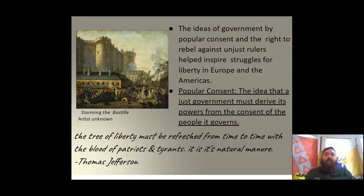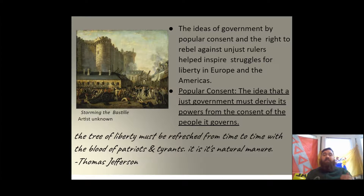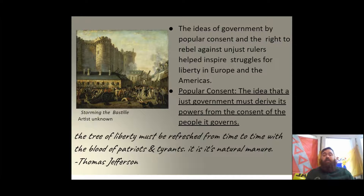The idea that citizens have the right to overthrow an unjust ruler is considered popular consent — the idea that a government must derive its power from the consent of the people it governs. The social contract is still in play: the populace gives their government the job of protecting their rights, and as long as the vast majority agrees they are doing an adequate job, that is a just rule. As history's favorite hypocrite, Thomas Jefferson, put it: 'The tree of liberty must be refreshed from time to time with the blood of patriots and tyrants. It is its natural manure.'